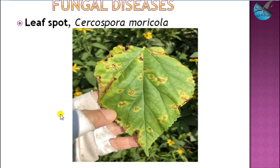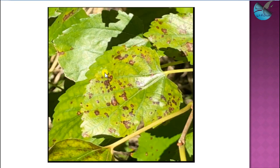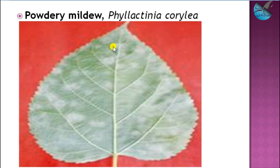Now we are getting into the diseases part. The first important fungal disease is leaf spot caused by Cercospora moricola. Concentric spots are the common symptom. For management, spraying of carbendazim is done. These are the symptoms — you can see the concentric spots.